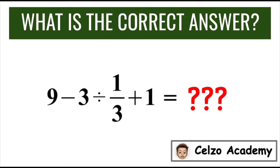This is another numerical expression problem dividing the internet. What do you think is the correct answer to this numerical expression: 9 minus 3 divided by 1 third plus 1?